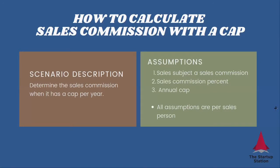What this means is that you are paying people a percentage of the sales, but the maximum of what they're going to get is capped per year. So here we're going to make all assumptions for a salesperson. First, we need to understand which sales are subject to the sales commission — it may be only some revenue streams, it may be new sales, it may also be recurring sales from existing clients. You need to understand the sales commission percentage and an annual cap.